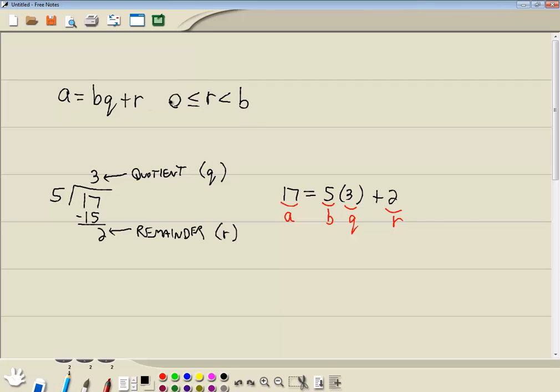So you can see there's nothing brand new in A equals BQ plus R. We've seen that before. Now our condition, that R has got to be between 0 and B, but can be equal to 0. Well, if your remainder, for example, is 6 in this particular example, then that means that you did not figure out the quotient correctly.